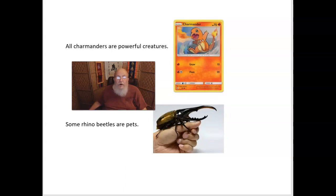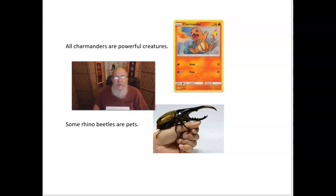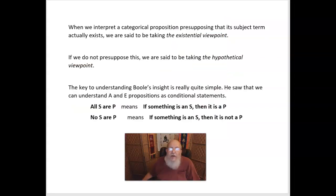We then say that the subject class names an empty class or an empty set — the category named does not include any actually existing things. So if I claim 'all Charmanders are powerful creatures,' that doesn't mean Charmanders actually exist — sadly. But if I claim 'some rhino beetles are pets,' that is true or false because rhino beetles actually exist. In fact, I had a student who had a rhino beetle as a pet and would bring it to class sitting on his shoulder, to the amazement of all of us. So the claim that some rhino beetles are pets is true, and it has existential import.